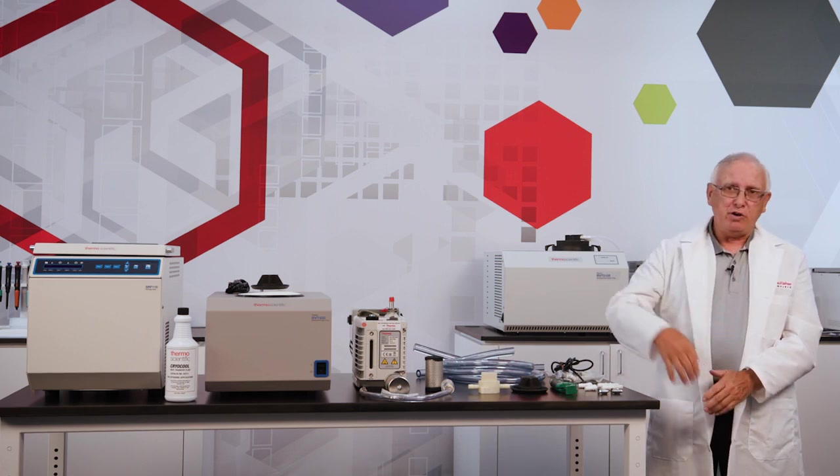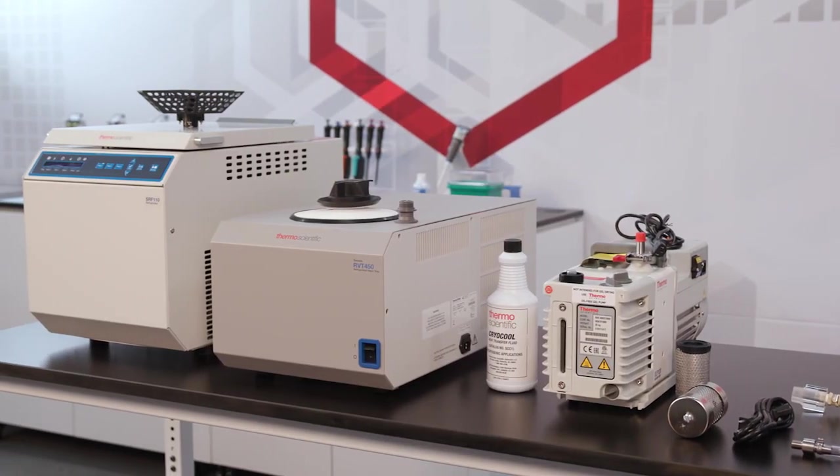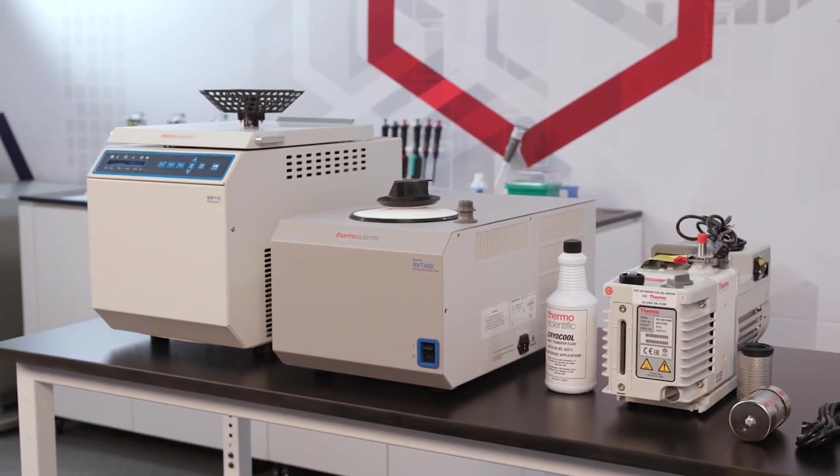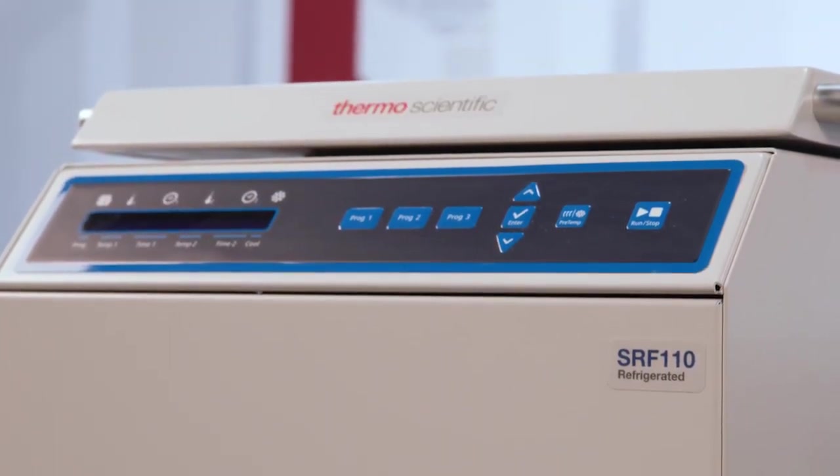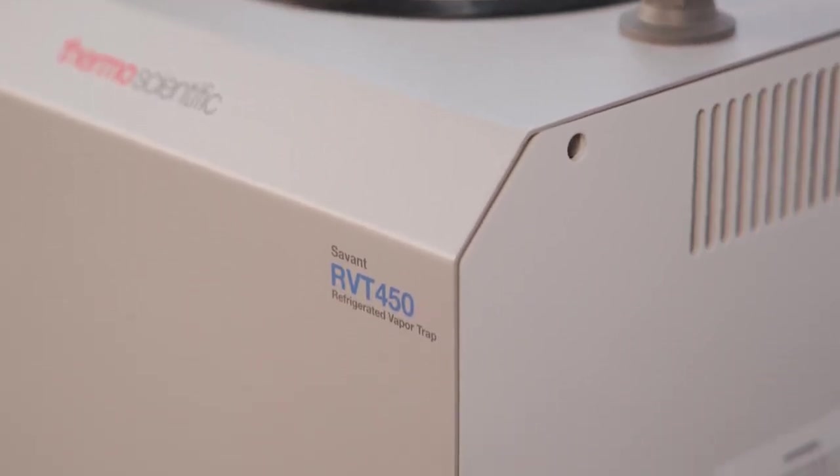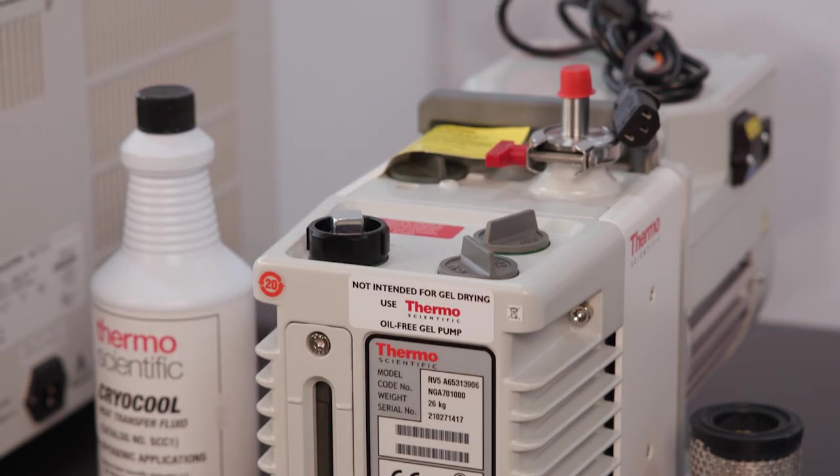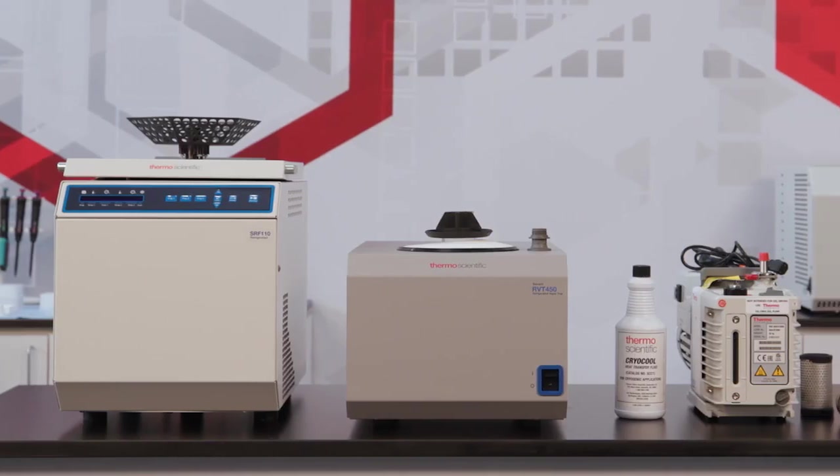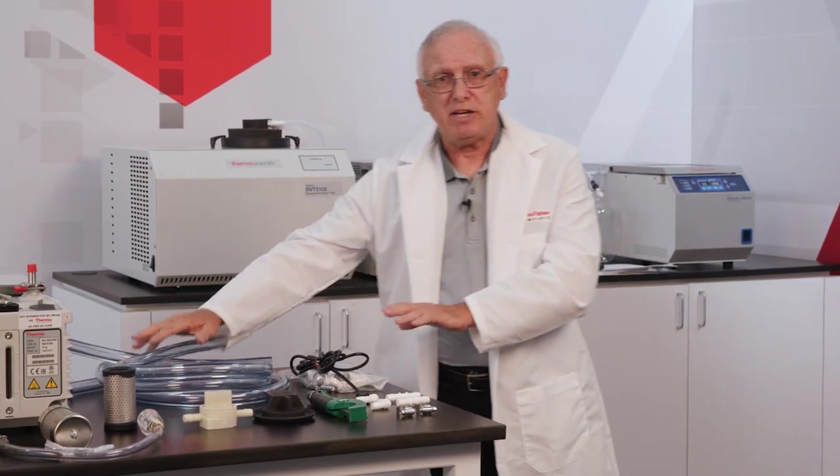This morning we're going to go over the installation of our new SRF110 SpeedVac P1 kit. This is going to incorporate three components: the SRF110 concentrator, the RVT450 minus 50 degree cold trap, and a standard VLP120 oil pump. This is a kit. Everything you need to install this is going to come in the kit, including a tubing package.